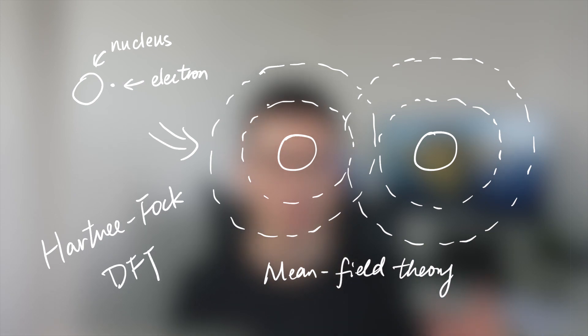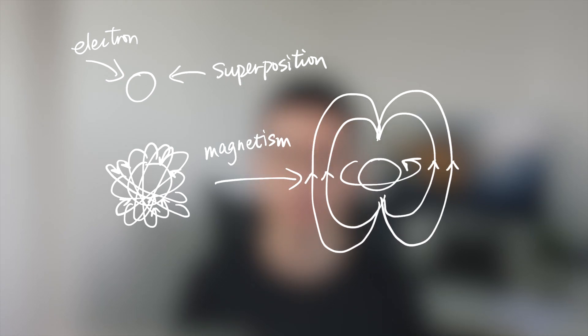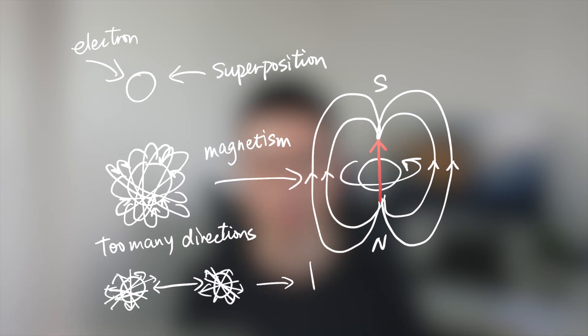The best a classical computer can do is approximate the value using methods like Hartree-Fock and density functional theory — but keep in mind these are all approximate values. Another property is electron spin. Spin is an intrinsic property of electrons; it's in superposition and can be in all directions. Since spin generates magnetism, and the directions of all electron spins can be in any direction, if we want to calculate interactions between electrons we have to store all the spin states in a classical computer.